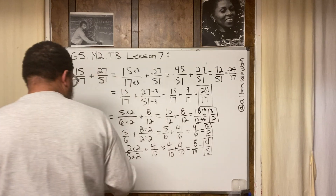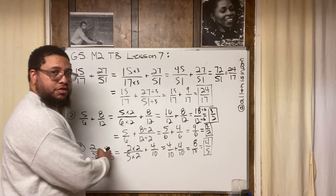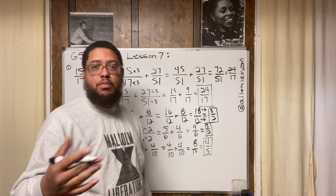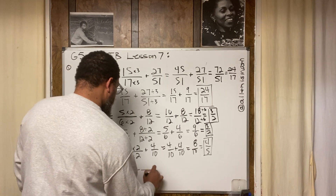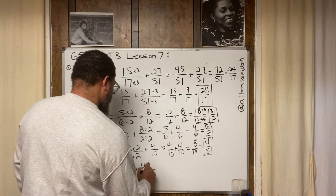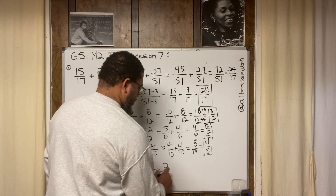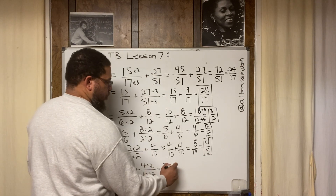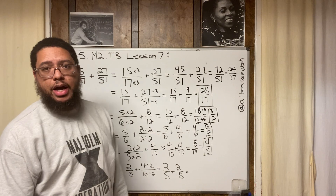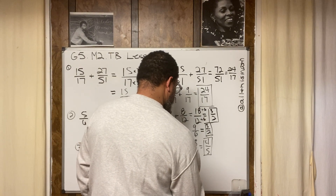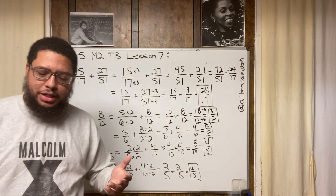Let's also compose: we can break the 4/10 down into fifths because 10 divided by 2 gives 5, and 4 is also divisible by 2. So we divide both by 2: 4 divided by 2 is 2, 10 divided by 2 is 5. That gives us 2/5 plus 2/5, which equals 4/5. With this approach we didn't even need to simplify — the answer came out fully reduced.